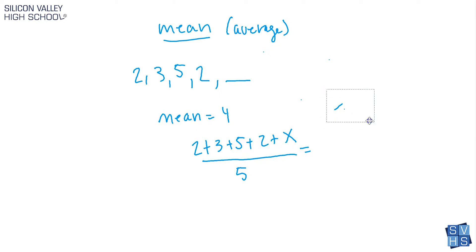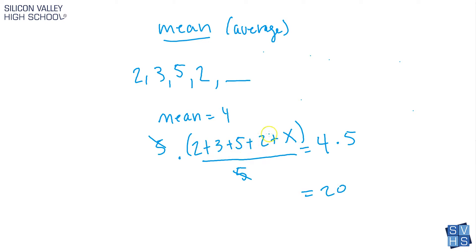They already gave us the mean, so we know it equals four. To get rid of the five in the denominator, multiply both sides by five. That leaves two plus three plus five plus two plus x equals twenty, which is five plus ten plus twelve plus x equals twenty. Subtract twelve from both sides, and x equals eight. To find a missing term: call it x, set up the mean equation including the variable, and solve.